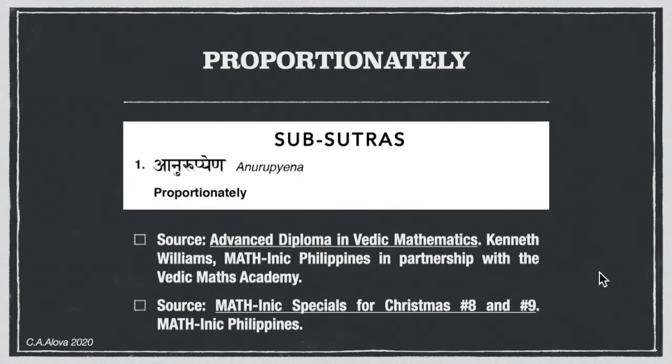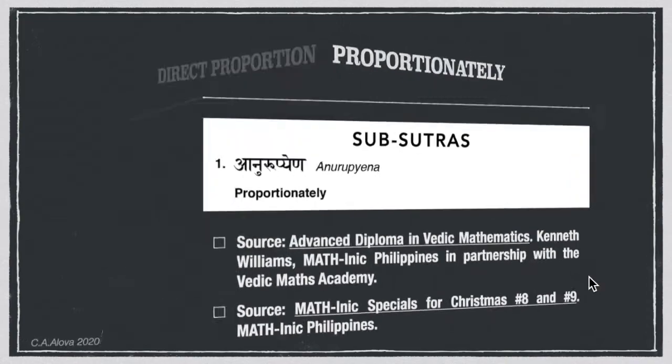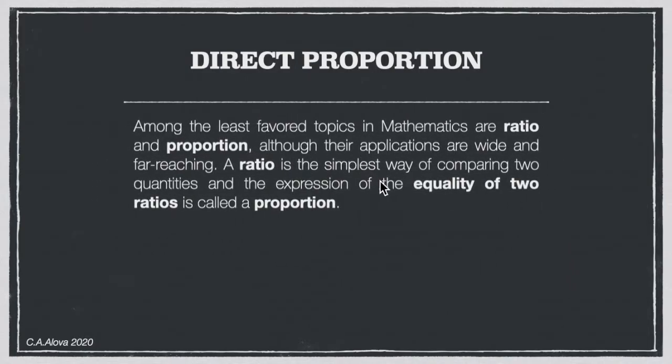To start off, we have direct proportion. I think we are all aware of what proportion is — the topic is mostly ratio and proportion. We have two types — actually three types of proportion: direct, inverse, and partitive. Among the least favored topics in mathematics are ratio and proportion, although their applications are actually wide and far-reaching.